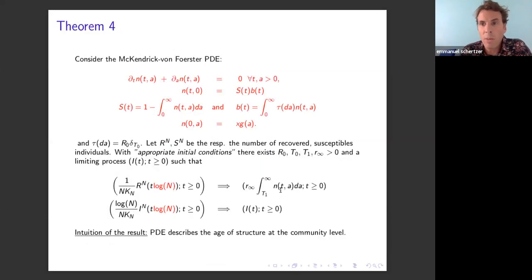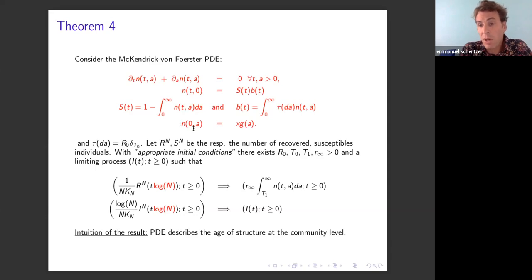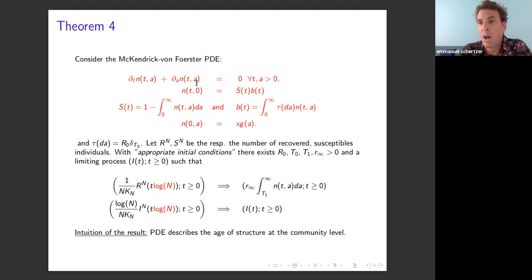The theorem establishing this: because you have very limited migration between different clusters, there is a separation of time scales. The McKendrick-von Foerster equation in this setting describes dynamics not at the individual level but at the community level — here a corresponds to the age of infection of a community, not an individual. Even in this very different spatial model, the limit is still described by a McKendrick-von Foerster equation.